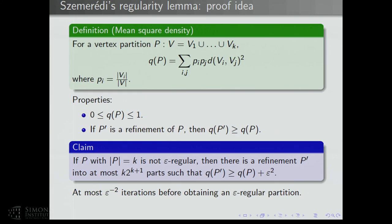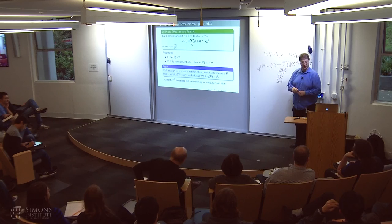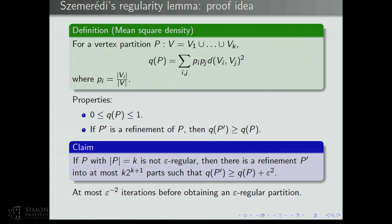How do we prove this key claim? There was a question: is there an analogy between this and the energy argument? It's the same thing. This graph regularity argument actually came first, and the arithmetic setting came much later but was motivated by this argument. They're fundamentally the same thing — sometimes people call this an energy increment argument.